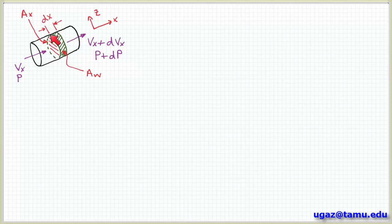So we have this disk of fluid of width dx and cross-sectional area of A_x. A_w represents this wetted contact area with the wall of the pipe. And then we have velocity v_x and pressure p entering the control volume, and velocity v_x plus dv_x and pressure p plus dp at the exit of the control volume.